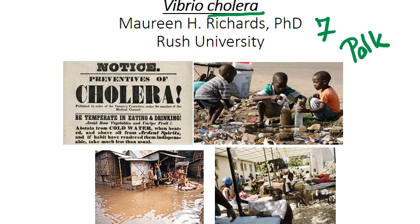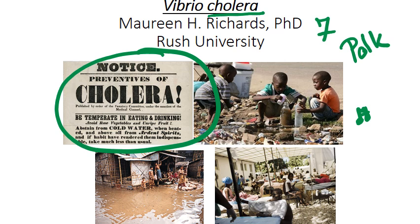King Charles X of France died of cholera in 1836. It is proposed that Tchaikovsky, the brilliant composer, died of cholera, though some historians believe he committed suicide after his mother died of cholera. But either way, cholera killed Tchaikovsky.